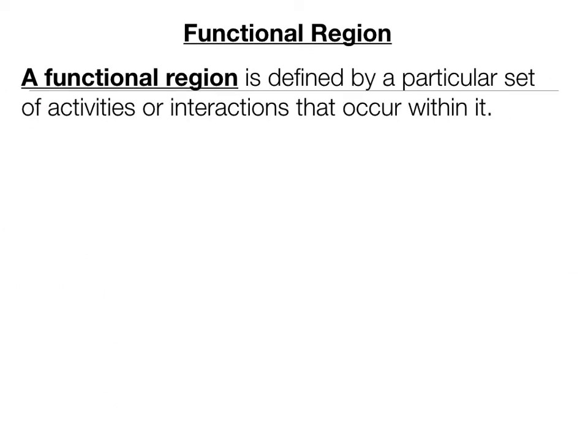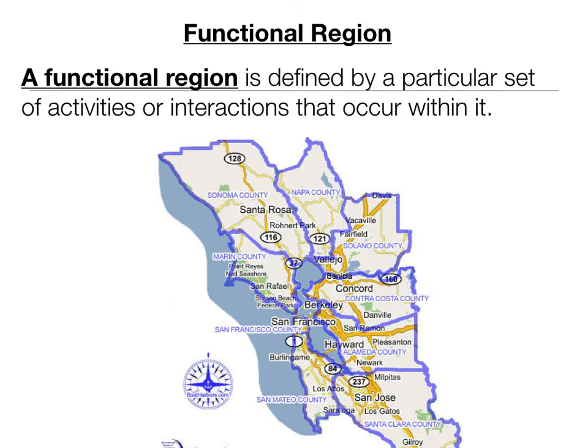A functional region is defined as a region defined by a particular set of activities or interactions that occur within it. The examples given in the book are cities and their surrounding suburbs — for example, Chicago or Washington, D.C. with their extensive suburbs. Our example is the Bay Area and the extensive suburbs and smaller cities within it, like San Francisco, San Jose, Oakland, Hayward, Berkeley, and Santa Rosa. The entire Bay Area is considered a functional region.